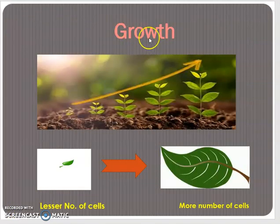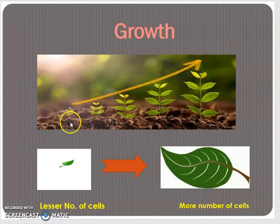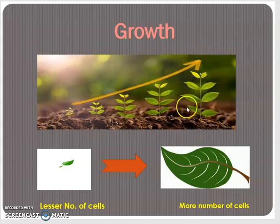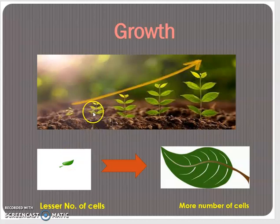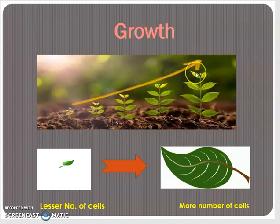To understand the process in a better way, I am taking the example of a plant. When we sow a seed, after some time a small seedling comes out, and after a few weeks it is converted into a well-developed plant. In this small seedling, there is a small root system, a small shoot system, and smaller leaves, while in a fully grown plant there is a well-developed root system, well-developed shoot system, and leaves of larger size.